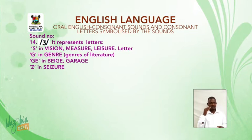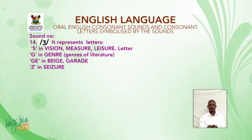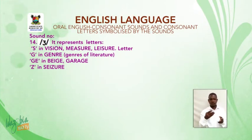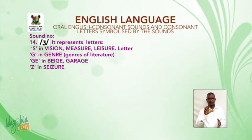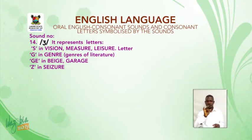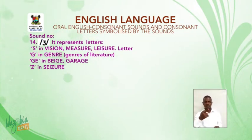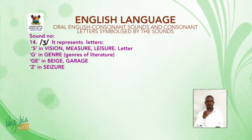Sound number 14: /ʒ/ (ZH). It represents letters S in vision, measure — not male — leisure; letter G in genre, genres of literature — not genre; GE in beige, garage; and Z in seizure.